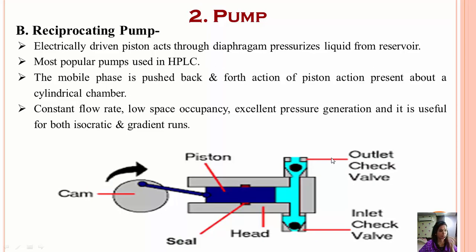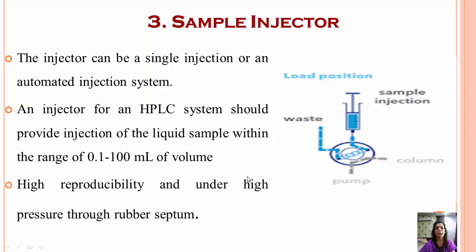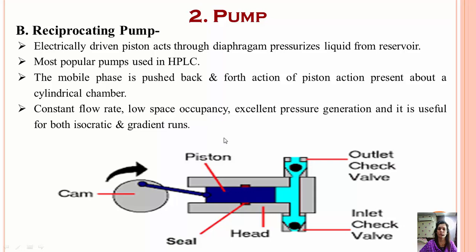The second pump available is the reciprocating pump, which is an electrically driven pump that acts through a diaphragm. You electrically apply pressure, and through the diaphragm it acts on the outlet and inlet valves. The inlet valve connects to the mobile reservoir where the solvent comes from, and the outlet connects to the HPLC column. A constant flow is achieved by the back-and-forth action of the piston through the diaphragm. It is very compact, generates excellent pressure, and is applicable for both isocratic and gradient runs.